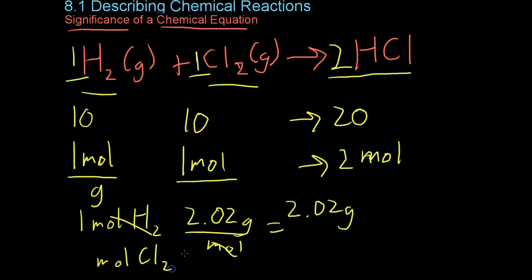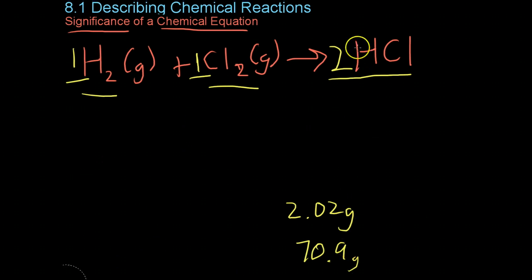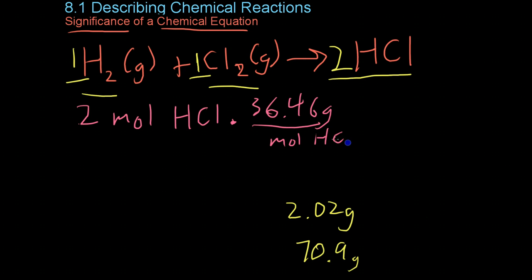Similarly, if you were to take a mole of chlorine, and its molar mass is 70.9 grams, you would get 70.9 grams of chlorine that you'd have to use. And similarly, if you were to take the two moles of hydrogen chloride on the other side and multiply by its molar mass, which is 36.46 grams per mole of HCl, cancel it out, you would get that the total mass on the reactant side would be 72.92 grams, which is exactly the sum of the constituent reactants that go into the reaction.